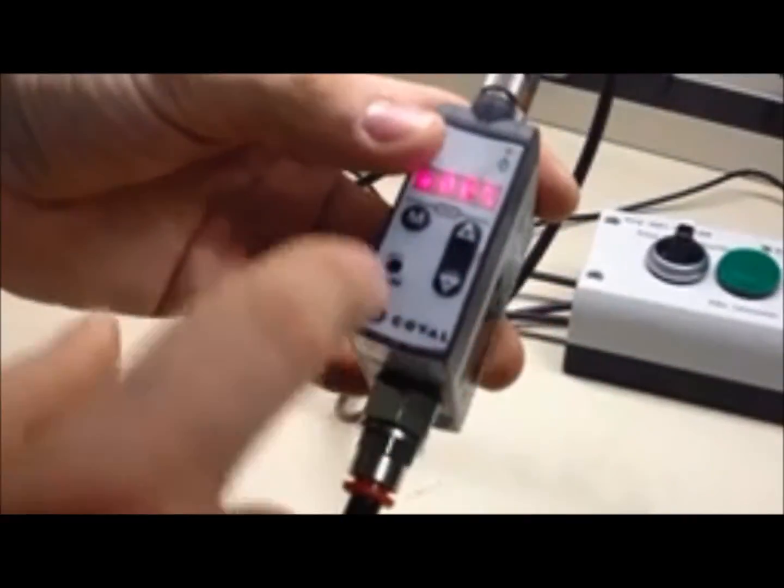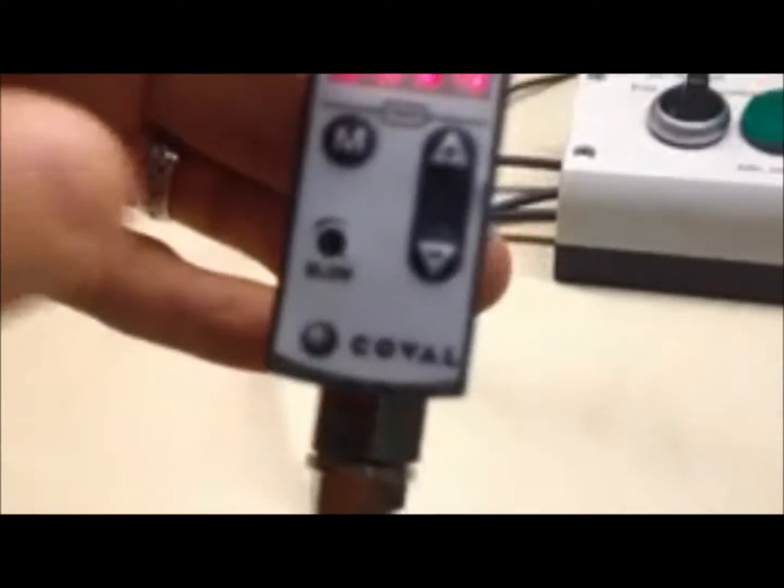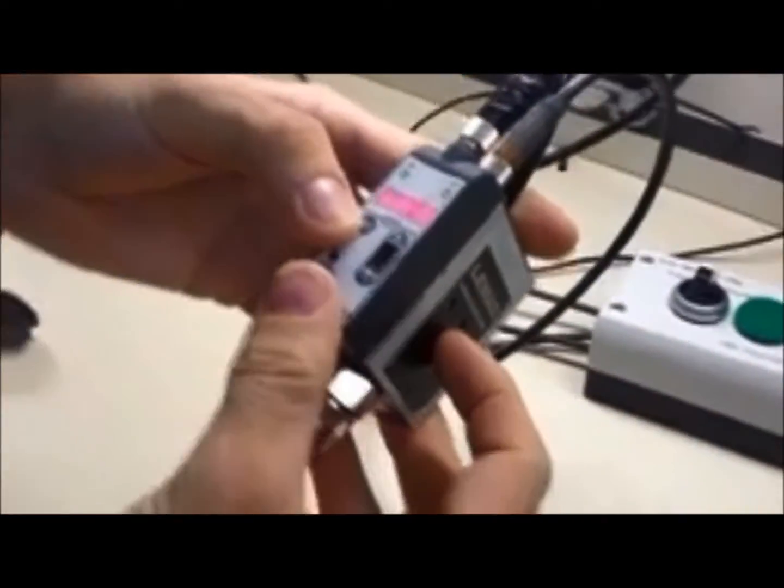That blow off is also adjustable right here on the front. You have a little screw. All you need is a little Phillips head. You can adjust the power or the flow of that blow off.